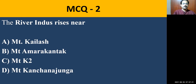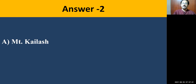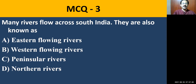MCQ question number two: River Indus rises near — Mount Kailash, Mount Amarakantak, Mount Ketu, or Mount Kanchanjunga. Where exactly does River Sindhu or Indus take its birth? The correct answer is Mount Kailash. In the Himalayan mountains, Mount Kailash gives birth to River Sindhu.